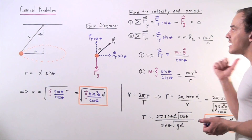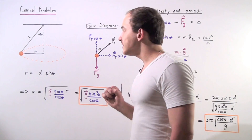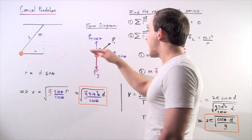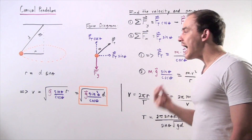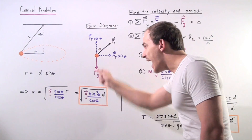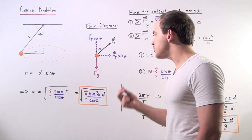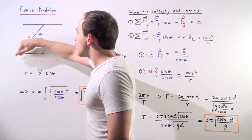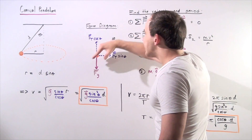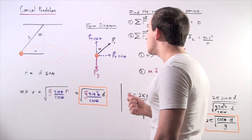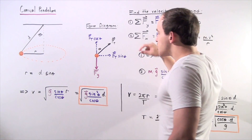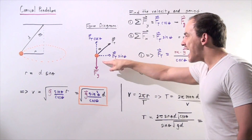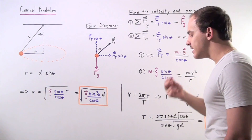Let's figure out the velocity formula by labeling all the forces acting on our object. Looking along the y-axis, we have gravity (mg) acting downward. The tension in the rope acts at an angle, giving us a y-component equal to T times cosine of theta, and an x-component equal to T times sine of theta.